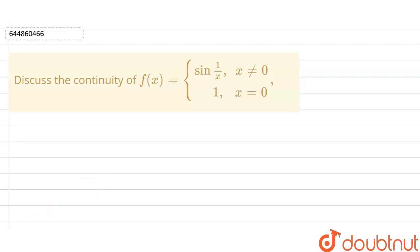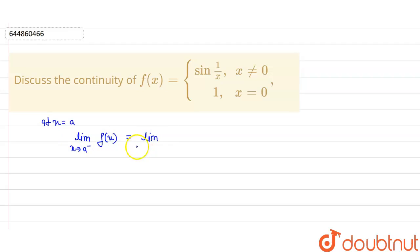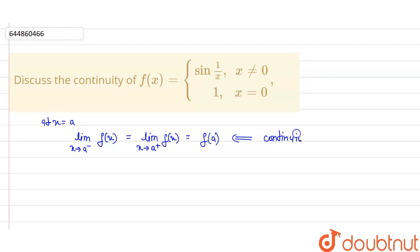For continuity at x equal to a, the left hand limit should be equal to the right hand limit, and it should be equal to f(a), for the function to be continuous. So we have to check the continuity at 0, and we will check LHL and RHL.